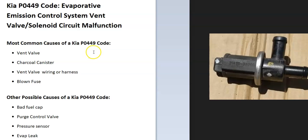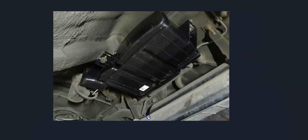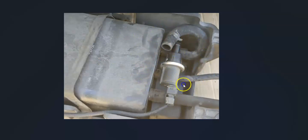The first thing to do when you get a P0449 code is to find the vent valve on your particular Kia. It'll be located underneath the car by the gas tank, near or inside the charcoal canister. For example, on a 2005 Kia Sedona, the vent valve is built into the back of the charcoal canister, so you have to remove the canister to access it. On other Kias it can be located separately, so you'll need a diagram for your particular model.